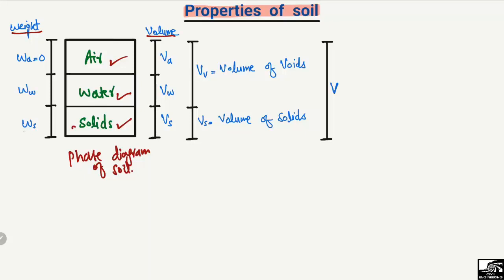The weight is represented on the left side, and on the right side we have the volume of the different components of the soil. On the weight side we have the solid weight represented by Ws, the water weight represented by Ww, and the weight of air represented by Wa. For the volume side, we have the volume of air represented by Va, volume of water by Vw, and volume of solids by Vs. The volume of air and water combined is known as the volume of the voids, and the total volume V equals Va plus Vw plus Vs.